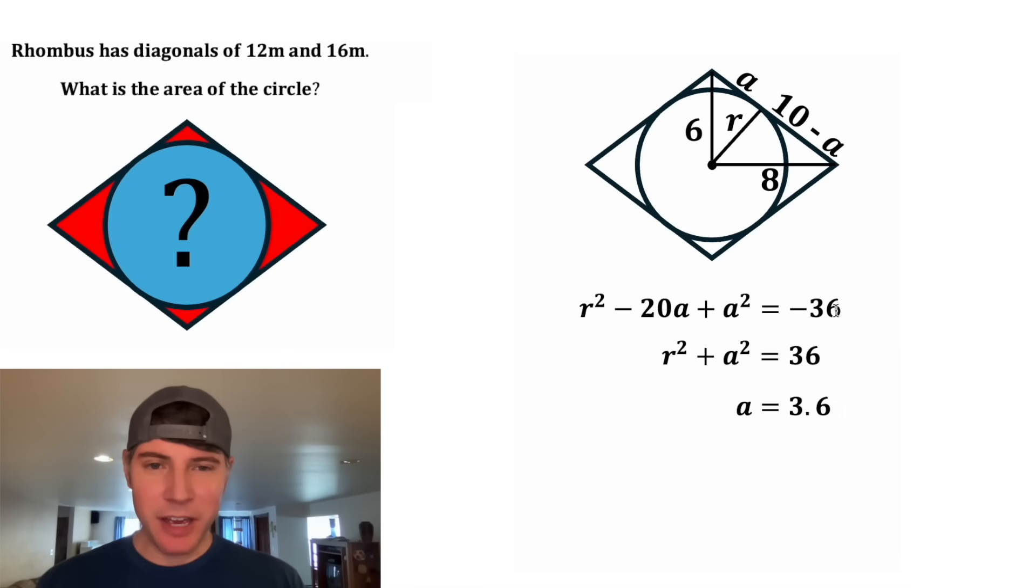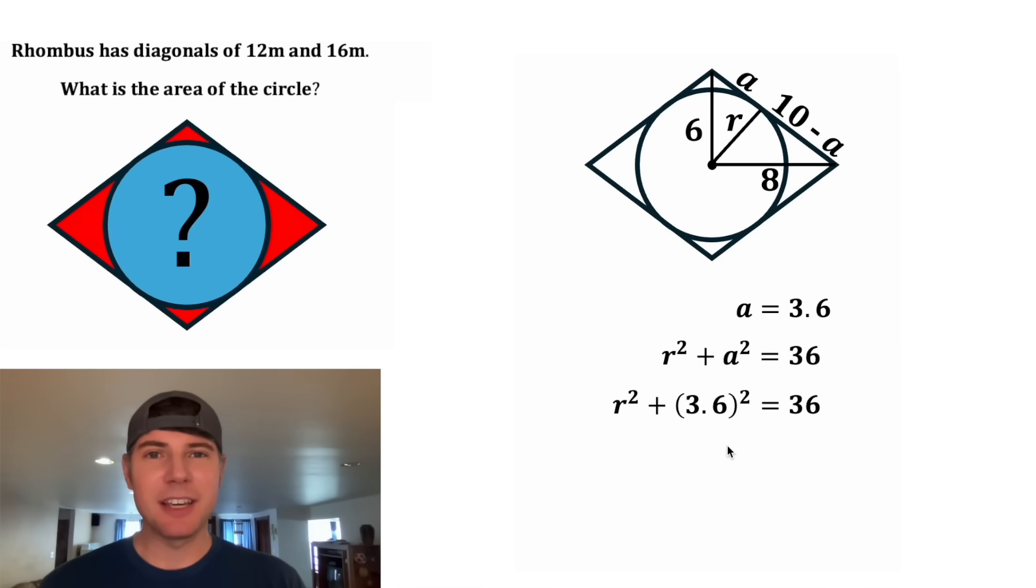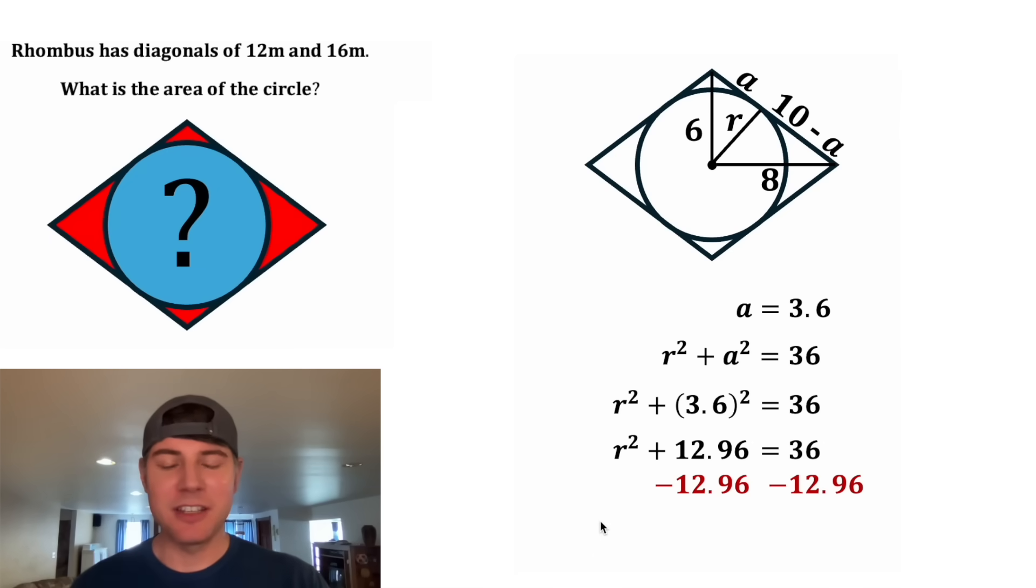Let's bring this up here. Now that we have A, I don't think we need this top equation anymore. Let's move this up here, and now for this bottom equation in the place of the A, let's plug in 3.6. Let's simplify the 3.6 squared to give us 12.96, and then we can bring down everything else. Let's subtract 12.96 from both sides of the equation, and that'll give us R squared is equal to 23.04.